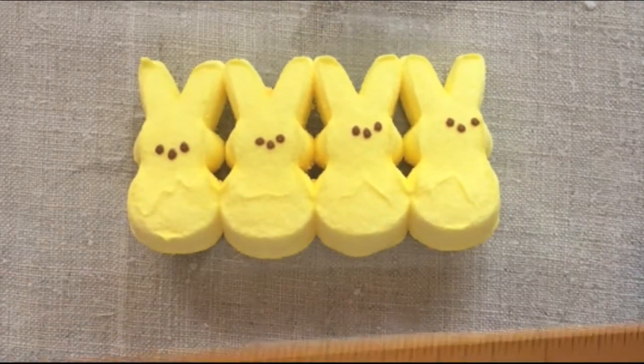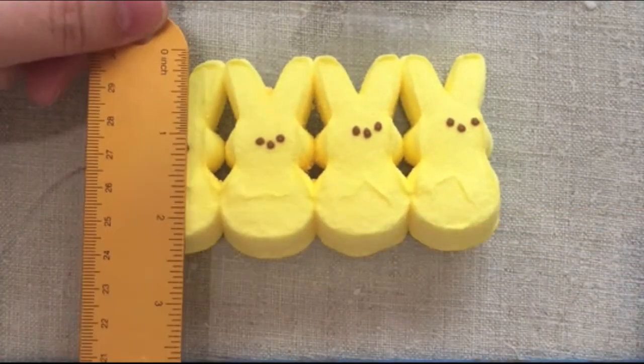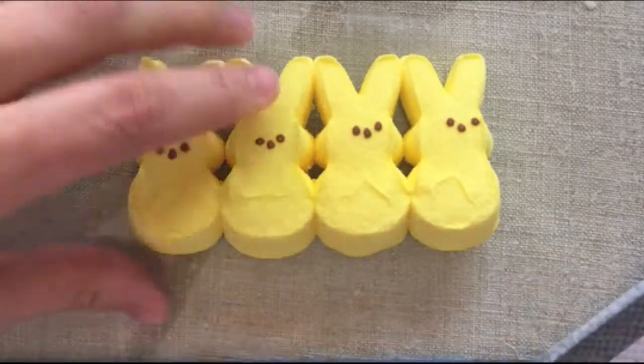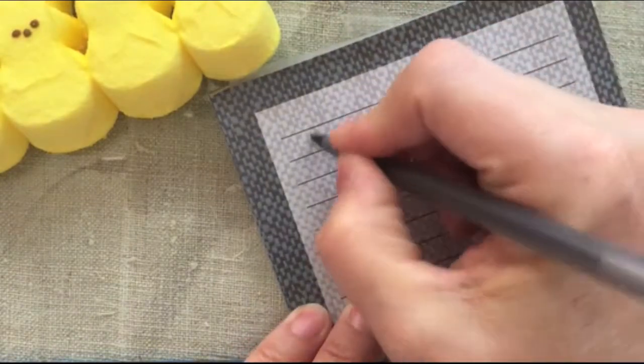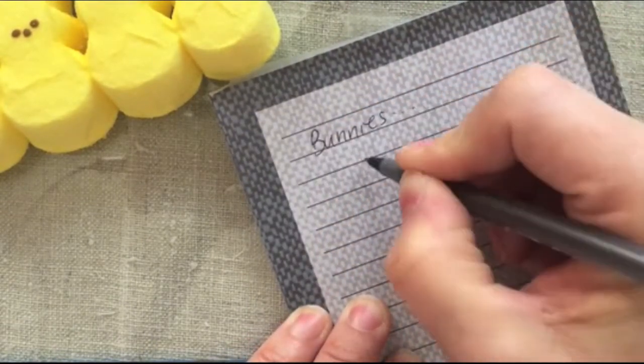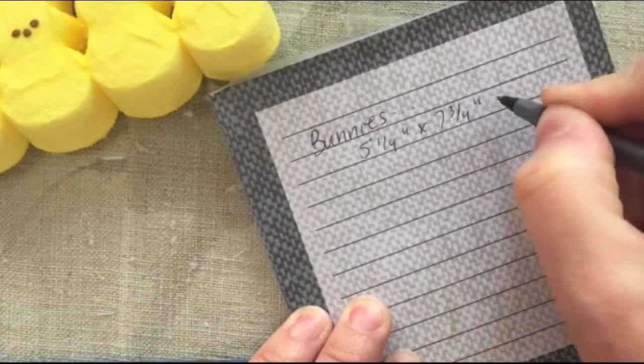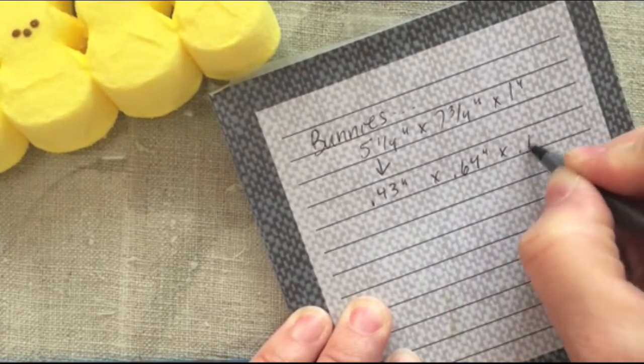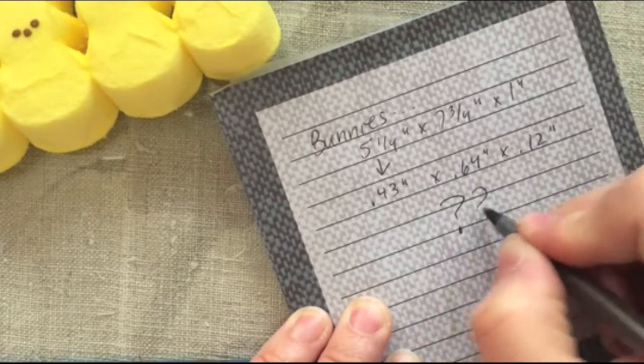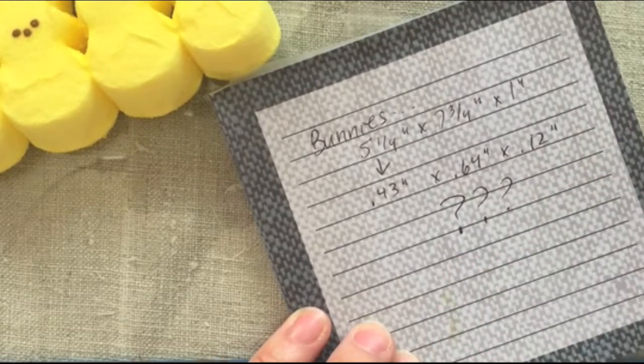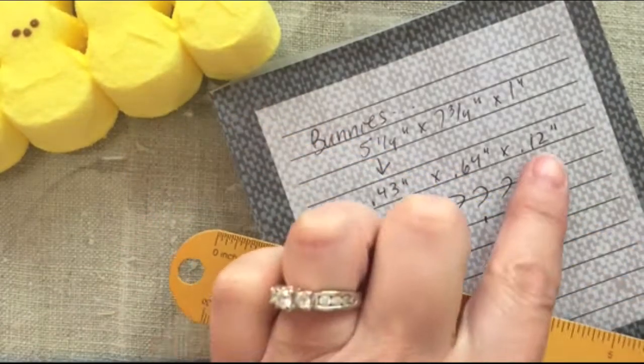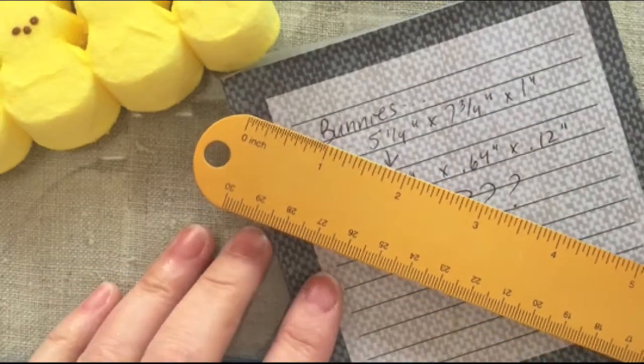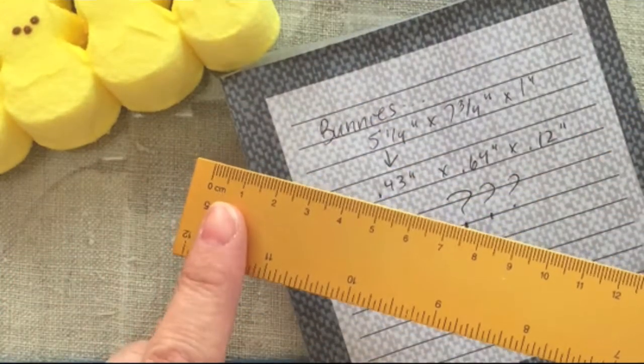So I thought it would be easiest to start with a row of Peeps because sculpting one tiny Peep is really tricky. So I measured the entire row of Peeps and then I wrote down the measurements on a piece of paper. Now, because I was educated in the American school system, I still use inches. And I found that dividing inches in these tiny proportions into like .12 of an inch is really tricky because .12 is not on the ruler. Let's use the metric system.